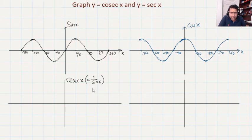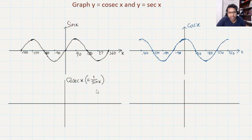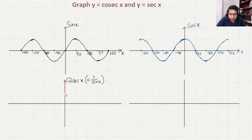Cosec X is the reciprocal of sine X, and sine X is in the denominator. So wherever sine X is 0, the denominator is 0, which means cosec X is undefined — giving you a vertical asymptote. The positions where sine X equals 0 give you the vertical asymptotes, such as at the y-axis.